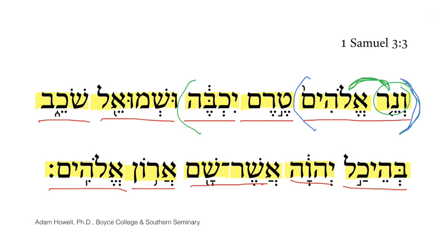The next part of the initial clause begins with terim, the adverb of time meaning 'not yet,' followed by the qal imperfect 3rd masculine singular of kavah, meaning 'to quench.'